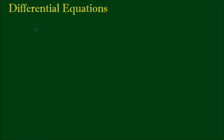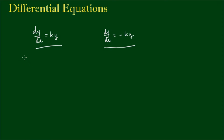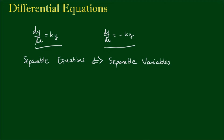So far in our journey into differential equations, we've covered first-order differential equations that model exponential growth or decay. We normally write these in the form of dy/dx equals ky for exponential growth, and dy/dx equals negative ky for exponential decay. Both of these examples fall under the umbrella of what we call separable equations, because we have separable variables. Think of these two equations as the simplest form of separable equations — we're just extending the idea further into a more general sense.